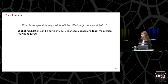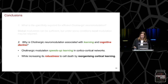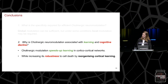Coming back to our questions: the first question was what specificity is required for efficient cholinergic neuromodulation. From our results, global modulation can be sufficient, but under some conditions local modulation may be needed to see this beneficial effect. For our second question — how the cholinergic system is associated with both learning and cognitive decline — it seems that cholinergic modulation affects learning in a way that leads to more robustness in the resulting networks.